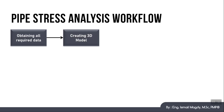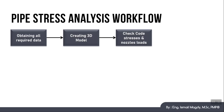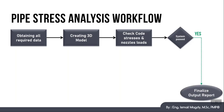Once our pipe model is created, we need to start checking the stresses code requirement and the loads on the equipment's nozzles. If the system directly passes, this would be our best case scenario and our life will be easy because we don't need to do any other modifications on the system, and we can just proceed directly with finalizing the output report.